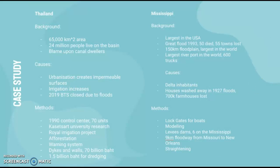These methods have negative consequences too, so keep that in mind for a balanced argument in an essay. Overall, comparing the two: Thailand seems to have more of a warning and prediction system approach, whereas the Mississippi relies more on structural measures.